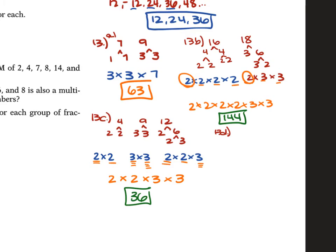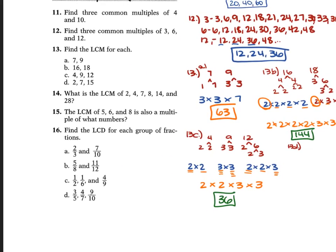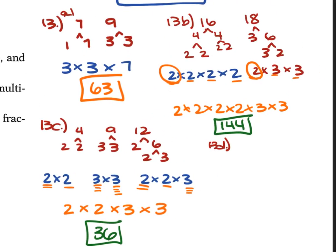For D, we have 2, 7, and 15. Since 2 and 7 are prime, and 15 is 3 times 5, we multiply all together: 2 times 7 times 3 times 5. That's 14 times 15, which is 210.